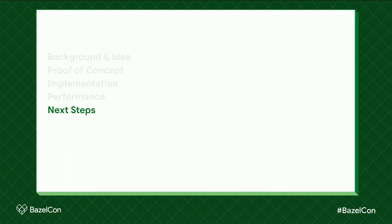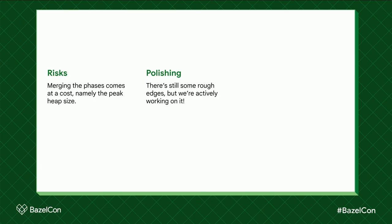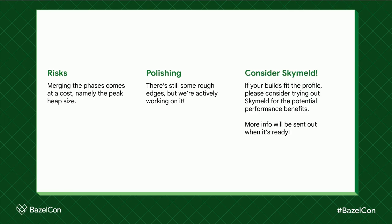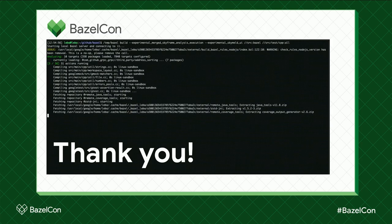There is a risk with this project: the incremental state doesn't come for free — you pay extra heap cost to maintain all the states during the build. We still need a lot of polishing — there are around 50 bugs to fix. But we're actively working on it. If your builds fit the profile, please consider SkyMelt — you can give it a try by simply flipping a flag. I'll send out more information when it's ready. And here's a screen recording of Bazel doing analysis and execution at the same time. With that, thank you.